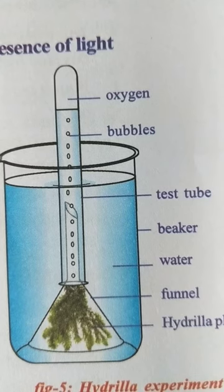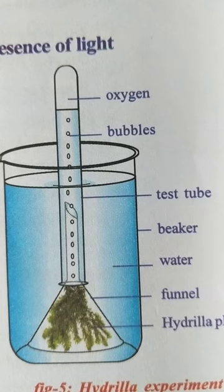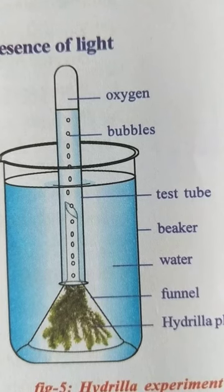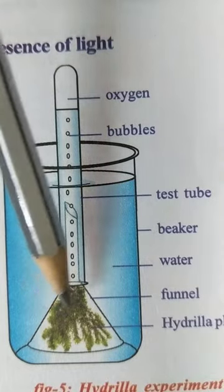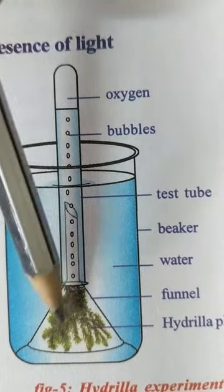The glass beaker is filled two-thirds with water. Take a thistle funnel - this is a thistle funnel. In the mouth of the thistle funnel you have to fix the Hydrilla twigs.